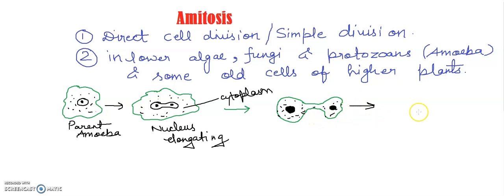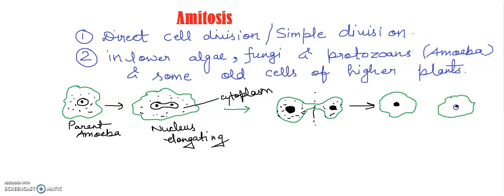Finally, the cell will divide into two daughter cells. This is the first daughter cell and this is the second daughter cell. There will be splitting of cells, and you have to draw the nucleus inside each cell. This is the cytoplasmic content inside the cells.